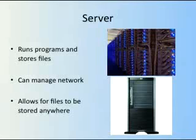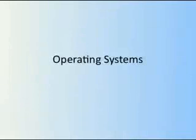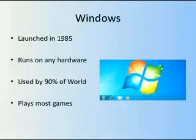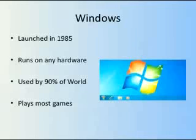So, finally, operating systems. Microsoft Windows is the world's largest operating system, partly because it runs on any hardware which is made for a PC — so IBM, Dell, Hewlett-Packard. The other reason it is so widely used is because it plays most games. Most games that are made use the Windows 3D drivers DirectX, which means they have to work on Windows.